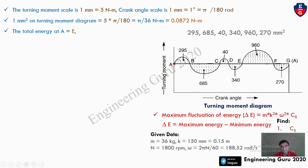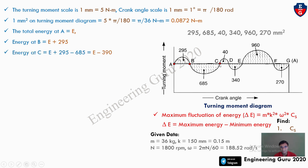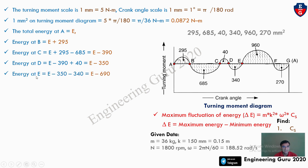We need to find the energy at all points: A, B, C, D, E, F, and G. Energy at A = E. Energy at B = E + 295. Energy at C = E + 295 − 685 = E − 390. Energy at D = E + 295 − 685 + 40 = E − 350.